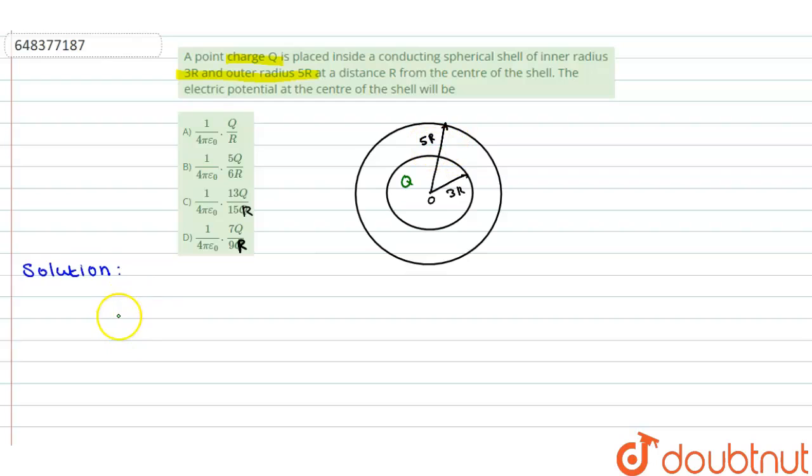Now, first, electric potential due to a point charge Q: V1 equals kQ/r, where r is the location of the point charge.